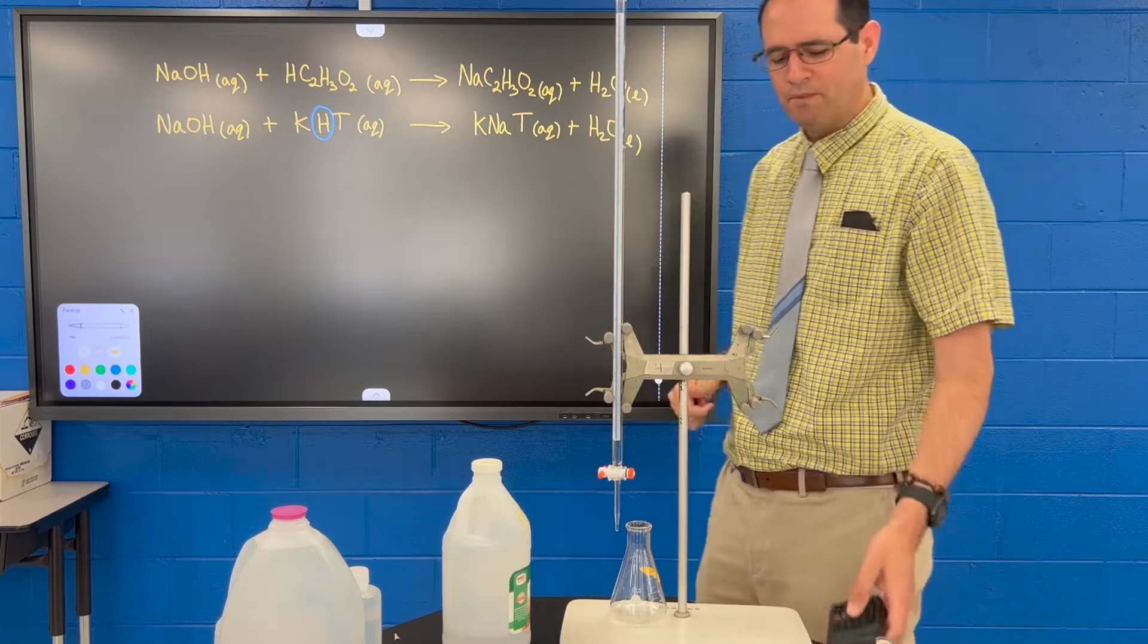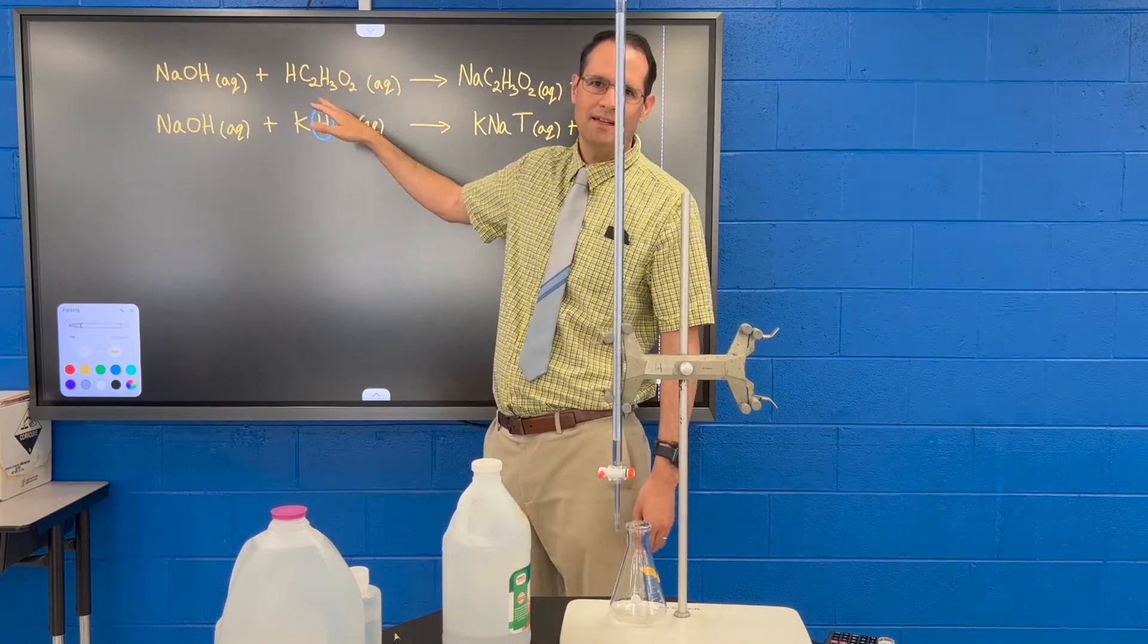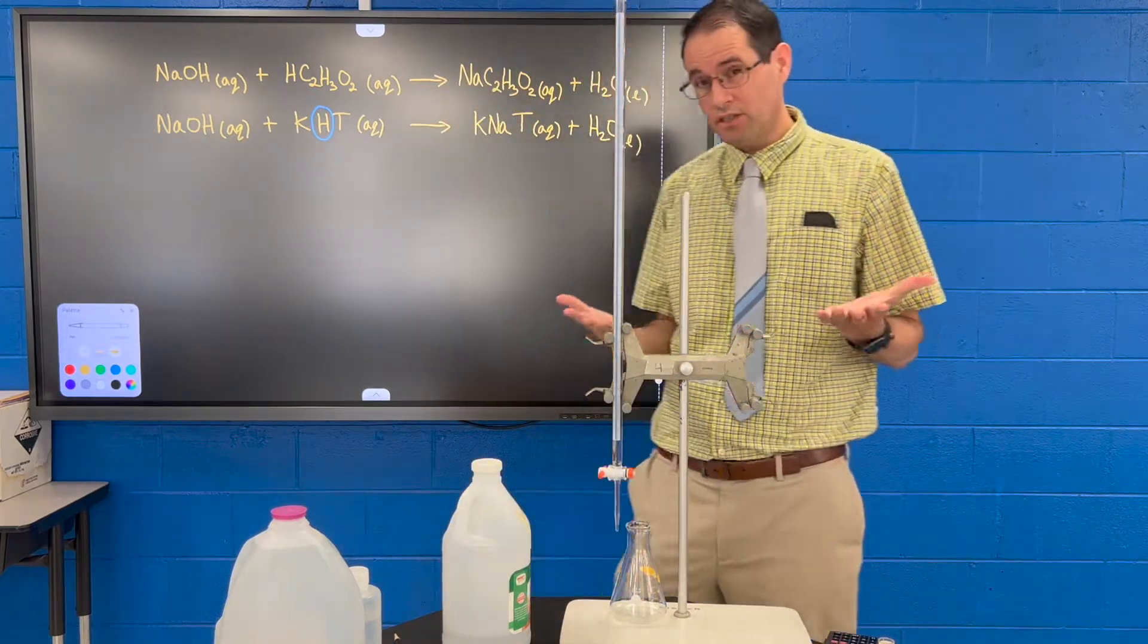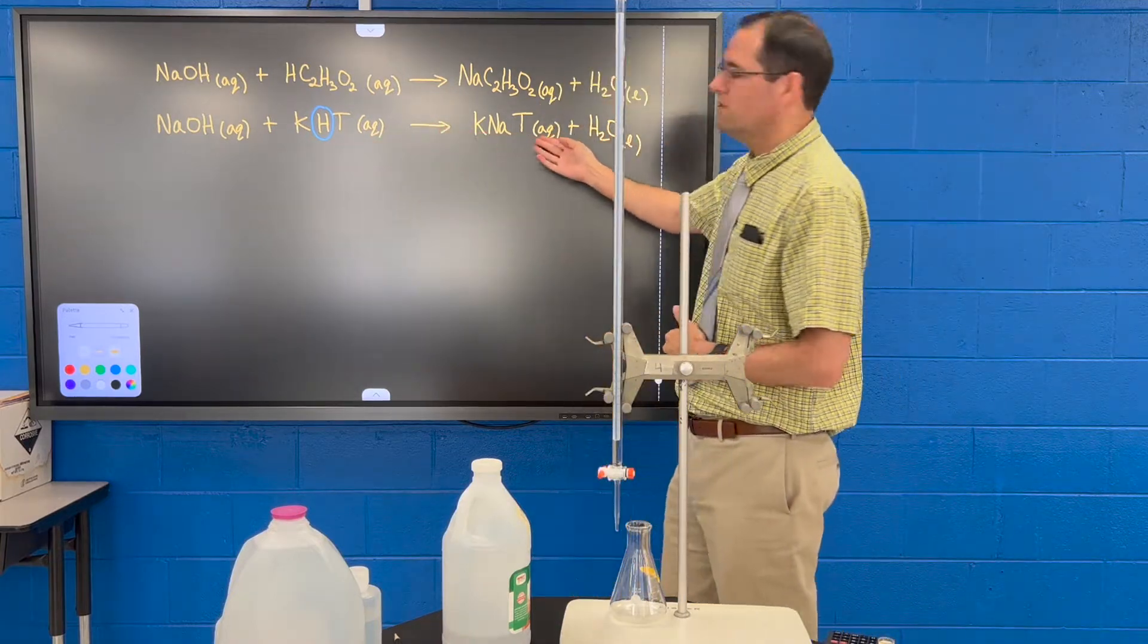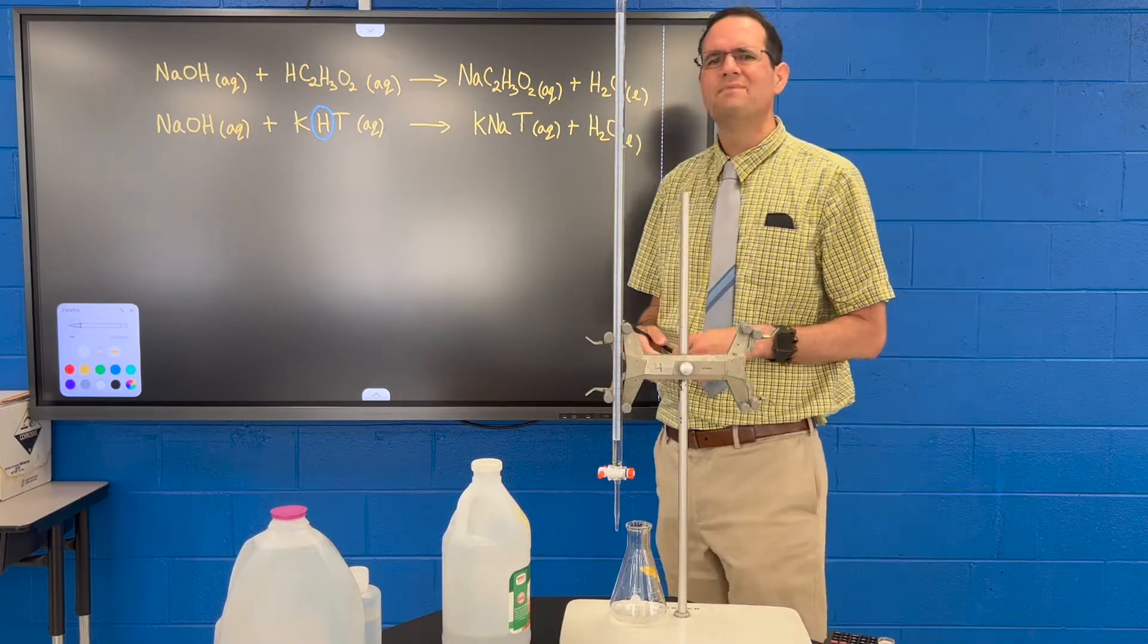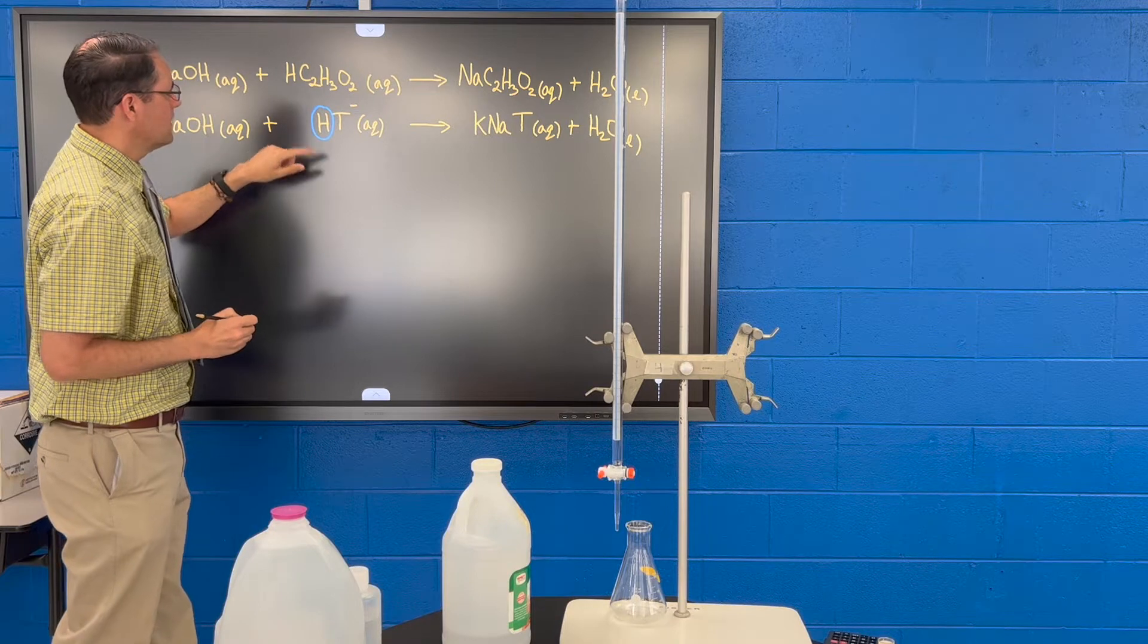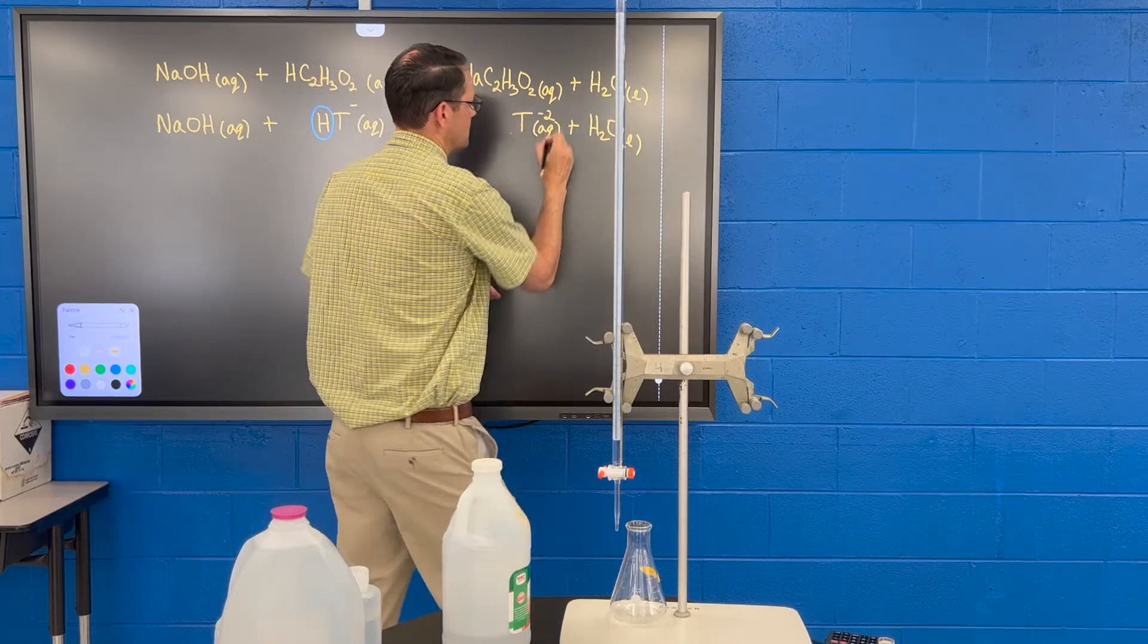So sodium hydroxide is our base and we react that with a monoprotic acid like acetic acid to give us sodium acetate and water. So it's an acid-base reaction. Sodium hydroxide will also react with potassium hydrogen tartrate. Hydrogen tartrate ion is a monoprotic acid, it's a weak acid that will react to give you the conjugate base and liquid water. Now including the sodium ions and potassium ions is a little bit confusing, so sometimes we leave those off. We might erase this potassium and just indicate the hydrogen tartrate ion there, and then over here on the product side we might just write tartrate with a minus two charge.